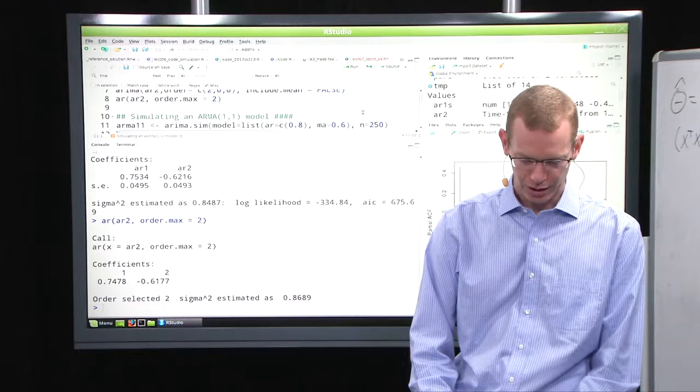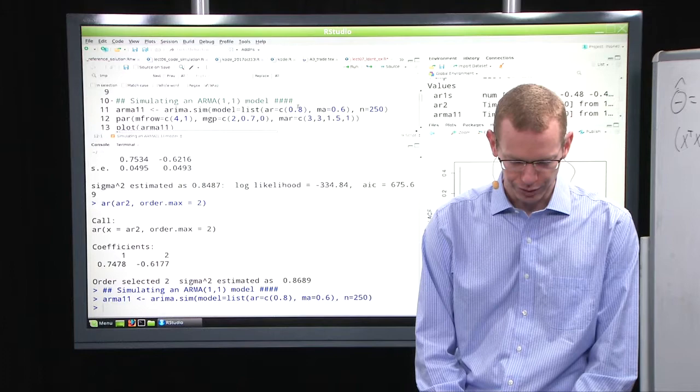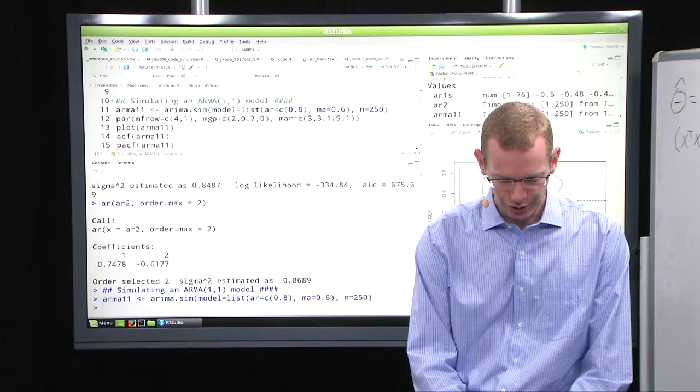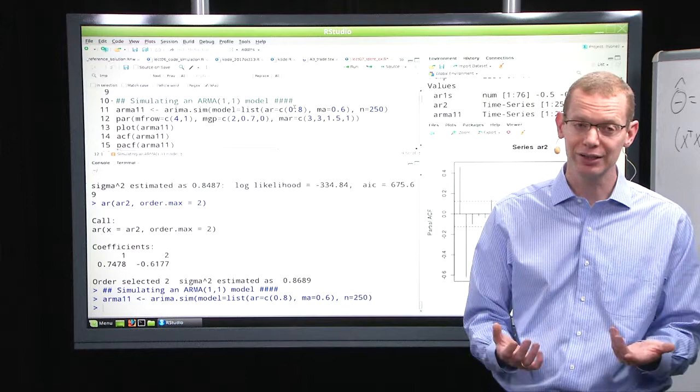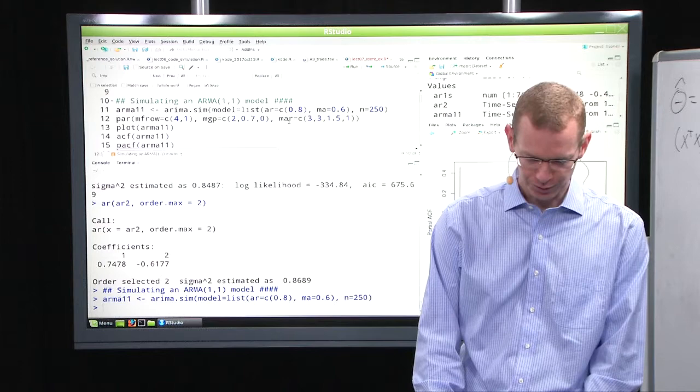Now I'll go to a different model, an ARMA 1,1 model with an AR parameter of 0.8 and a moving average parameter of 0.6. Notice this is the R definition, so it corresponds to phi 1 equals minus 0.8.